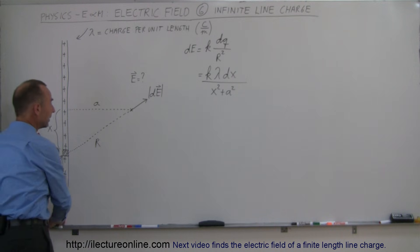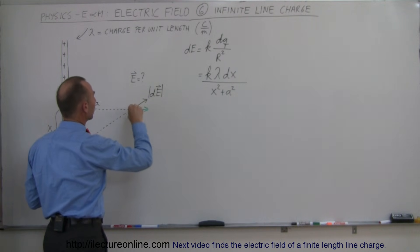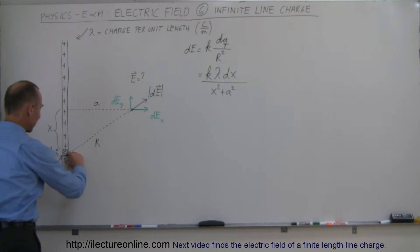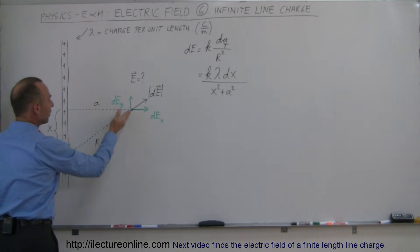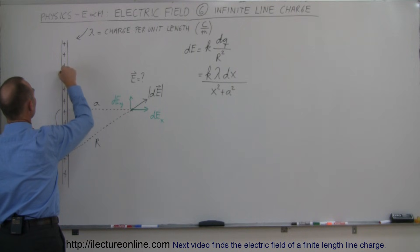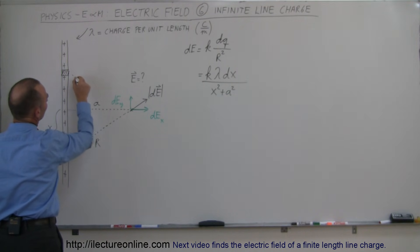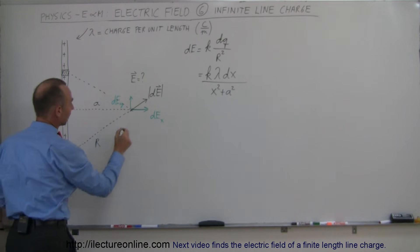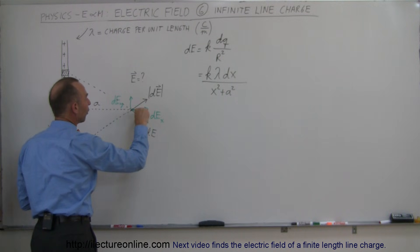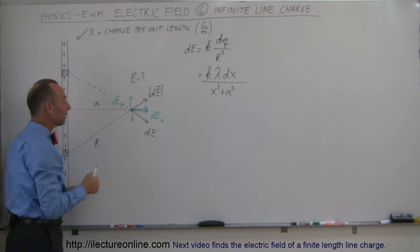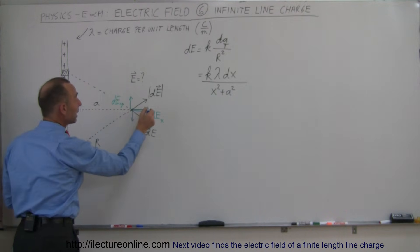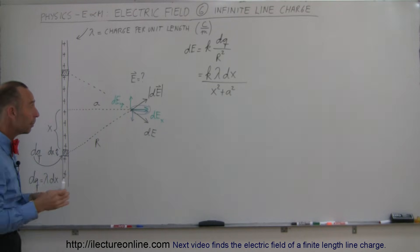Now notice that this vector quantity will have a horizontal component and a vertical component — a DE in the X direction and a DE in the Y direction. And for every little line segment, as I move it over, you'll have a horizontal component and a vertical component. But you will also have line segments on the other side. When you build the line segments over here and find the electric field due to that line charge, those will also have vertical and horizontal components. Since there's the same number of segments below this point as above it, the vertical components will cancel out, and the only components remaining will be the horizontal components.